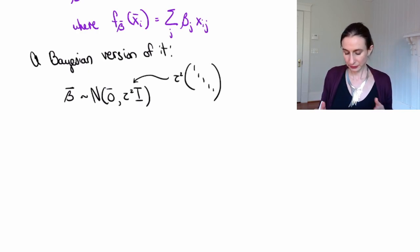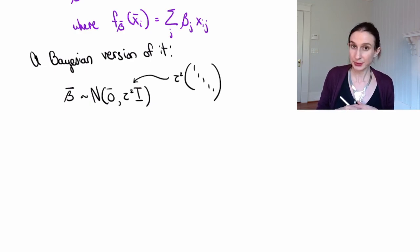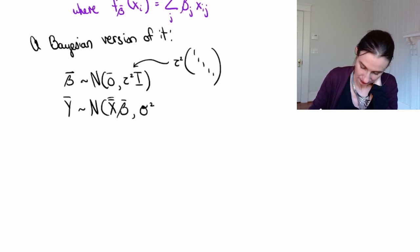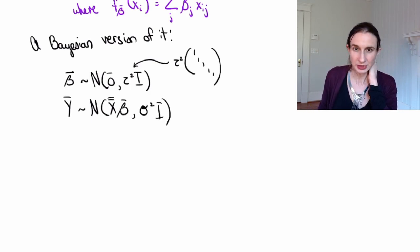So here we force the covariance matrix to be diagonal because we want all the betas to be generated independently. We don't want them to depend on each other as they're being generated. That's part of our prior belief. And similarly, all of the y's are generated independently of each other. They don't depend on each other. They only depend on x beta.